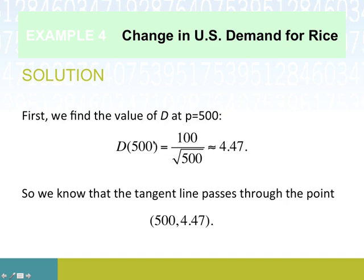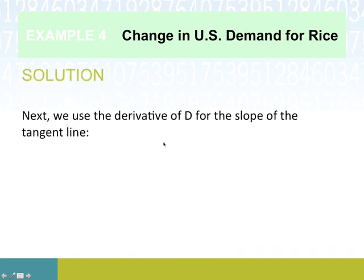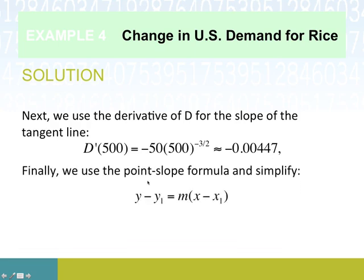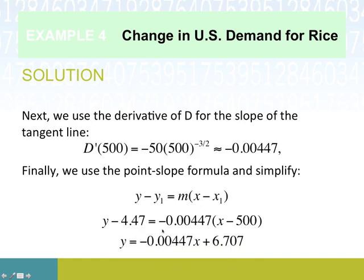We know the tangent line hits (500, 4.47). We'll use our derivative—this is our conclusion from part A—along with point-slope form, because we have a slope (the derivative) and we've got a point (x1, y1). We use our y, our x, and the slope we were handed. With a little simplification, just adding 4.47 over and multiplying this out, this should be our equation. For values very close to 500, this is a linear description of what our demand function would look like.